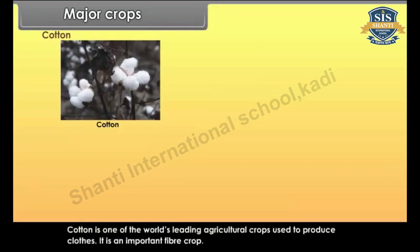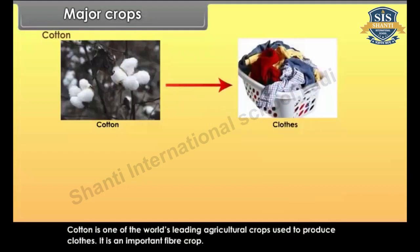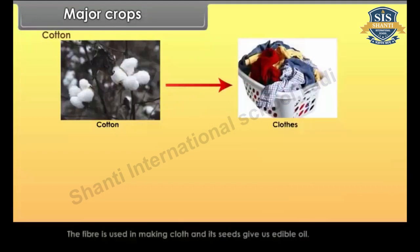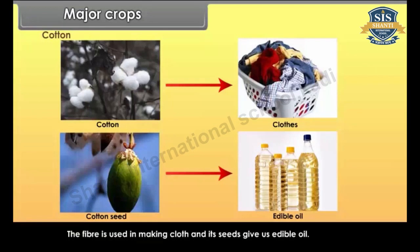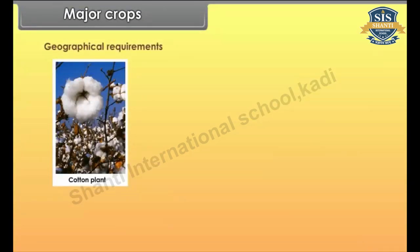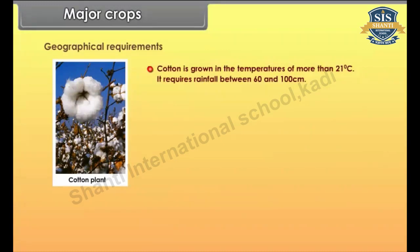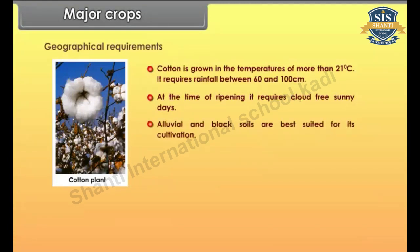Cotton is one of the world's leading agricultural crops used to produce clothes. It is an important fiber crop; the fiber is used in making cloth and its seeds give us edible oil. Cotton is grown in temperatures of more than 21 degrees Celsius. It requires rainfall between 60 and 100 cm. At the time of ripening, it requires cloud-free sunny days. Alluvial and black soils are best suited for its cultivation.